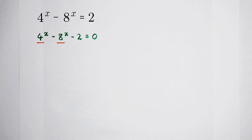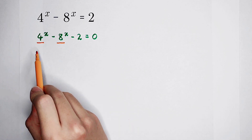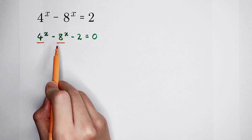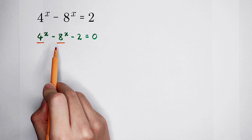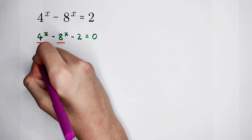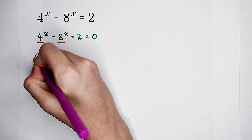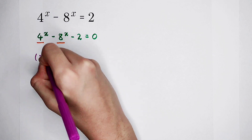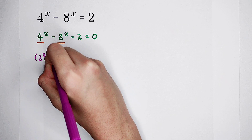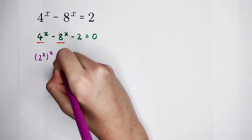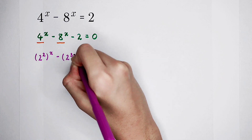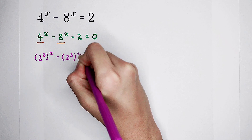So now let's replace 4 as 2 to the power of 2, and regard 8 as 2 to the power of 3. So 4 is written as 2 squared, and 8 as 2 cubed.